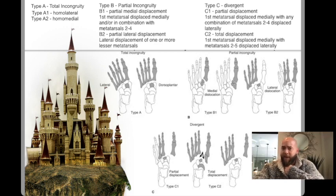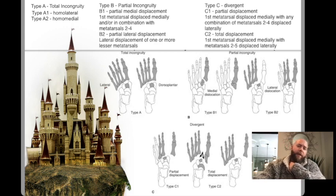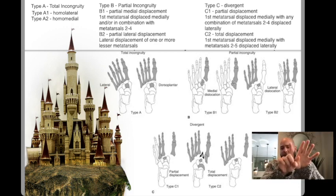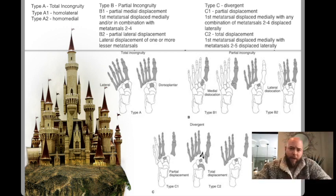it's A, B, and C, from best to worst injury. A is all metatarsals are dislocated. B is one or a few of the metatarsals are dislocated, and C is divergent — they're split down the middle in any form or fashion.